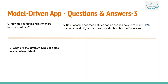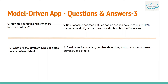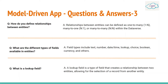Next question: What are the different types of fields available in entities? Field types include text, number, date/time, lookup, choice, boolean, and currency. There are around 12 different field types.